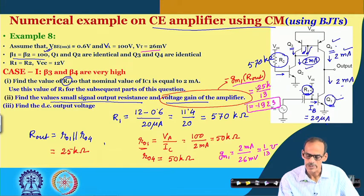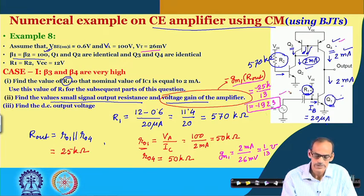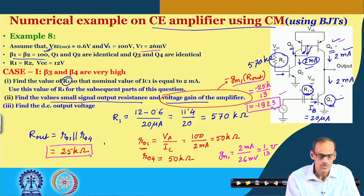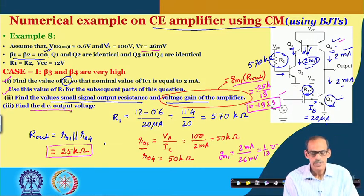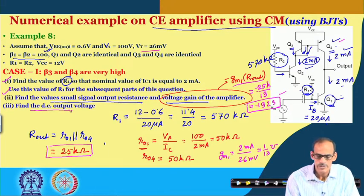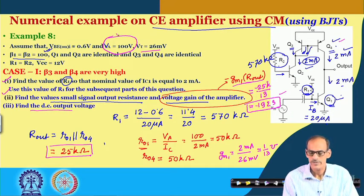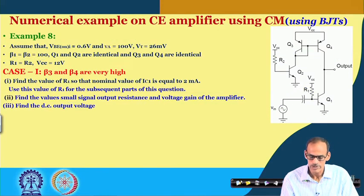As expected, since we have an active load, the gain is very high and the output resistance is also high. Now the next part of this question is to find the DC output voltage — for which we need to consider the Early voltage very carefully. Let me clear the board and then we will talk about the DC voltage.